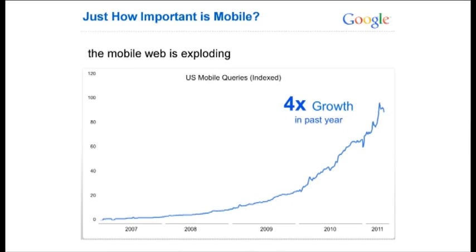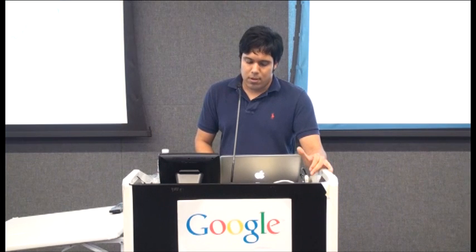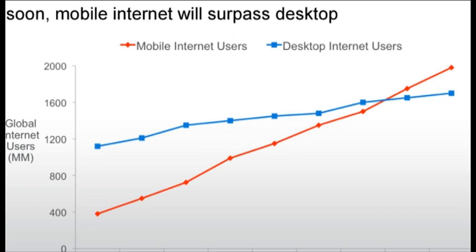Some more interesting stats: the mobile web is exploding. This graph shows US mobile queries and the growth over the last year. The y-axis is indexed so we don't show exact numbers, but it gives an idea of the trend. In the last year we've seen a 4x growth in mobile search queries in the US. Mobile internet usage is also soon going to surpass desktop internet usage — if current trends continue, we see that happening in mid-2013.